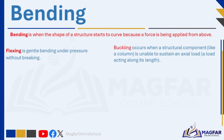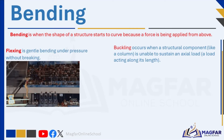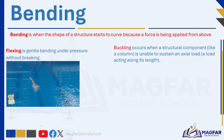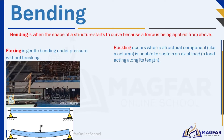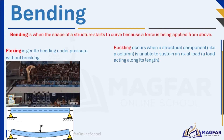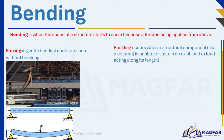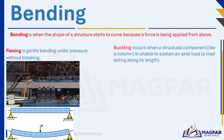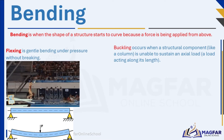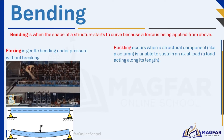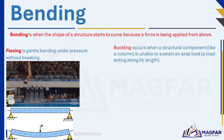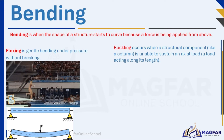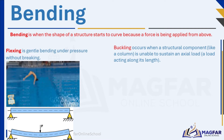Bending is when the shape of a structure starts to curve because a force is being applied from above. This occurs when a member bends or deforms due to lack of stiffness, or when the member is not rigid enough. Stiffness is the ability of a material to resist bending under load. A structure bends when more force is applied than the member can sustain. This can happen if the member is too thin and long, made from a weak material, or there could be design flaws. Bending results in what we call flexing or buckling.